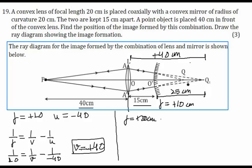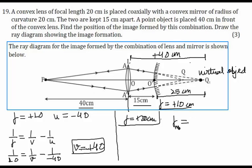The first image forms 25 centimeters from the mirror and acts as an object for the mirror. Because this image forms behind the mirror, it is a virtual object — a converging beam falling on the mirror. For the mirror, the focal length is +10 and the object distance is +25 centimeters, since the virtual object is on the right-hand side of the pole of the mirror.